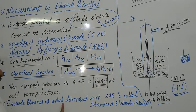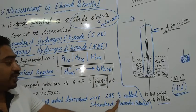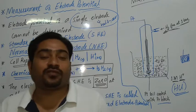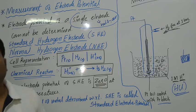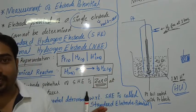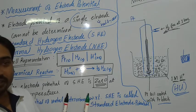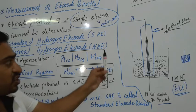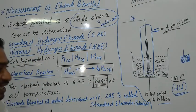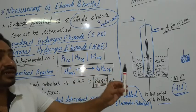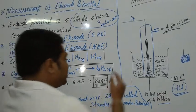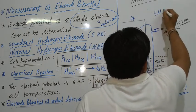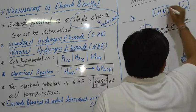The electrode potential of a metal determined with respect to the standard hydrogen electrode is called the standard electrode potential. For example, to calculate the electrode potential of a copper electrode, I take the standard hydrogen electrode and connect it with the copper electrode. For simplicity of calculation, we always take the standard hydrogen electrode as the anode and the copper electrode as the cathode.